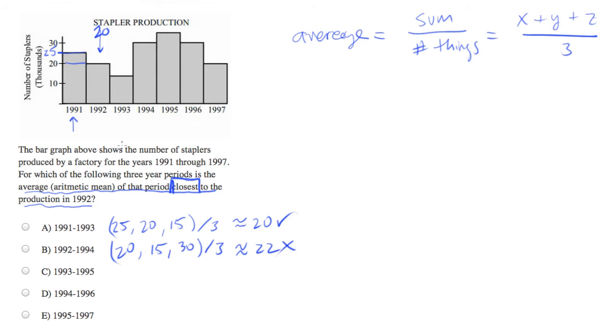93 to 95, that's going to be 15 for 93, 30 for 94, and 35 for 95. Divide that by three, and it's going to be much greater than 20.